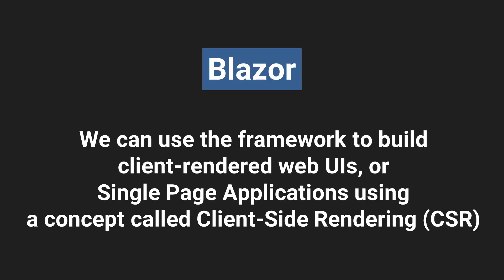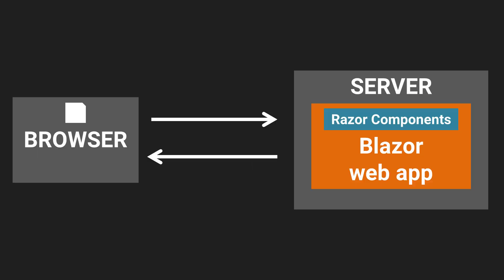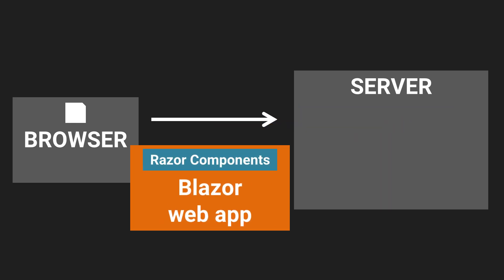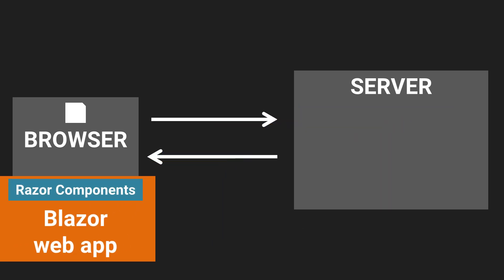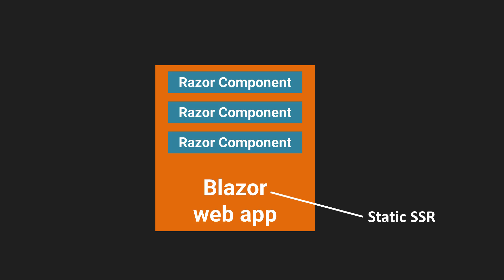Finally, we can use Blazor to build client-rendered web user interfaces or single-page applications using a concept called client-side rendering, or CSR. This also works at two levels. First, we can have global interactivity where the entire application with all its Razor components gets downloaded to the client browser and executes client-side on a WebAssembly-based .NET runtime. These components are interactive and can talk to a web API for data. Second, individual components can be made interactive using client-side rendering, meaning only those components get downloaded to the client browser.